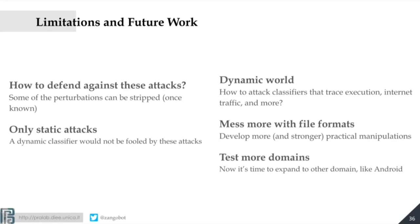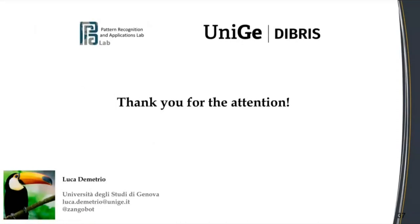This was only on static attacks — only on the structure. For future work, we can move to injecting some behavior inside the malware — for example, before encrypting your disk, the malware also prints something on the console, injecting behavior that keeps everything functional but also fools detectors that look at execution traces. It would also be nice to create more attacks against other formats — Unix files, for instance, since this was only Windows. You can keep going: take more domains, take more threats. Thank you for the attention.